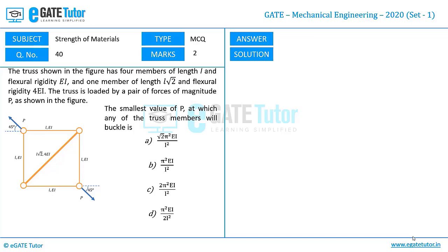Basically we need to find out the magnitude of P such that any one of the members in the truss configuration given can buckle. Let us go ahead and see the solution how to solve this.